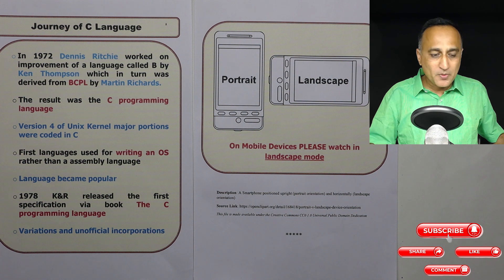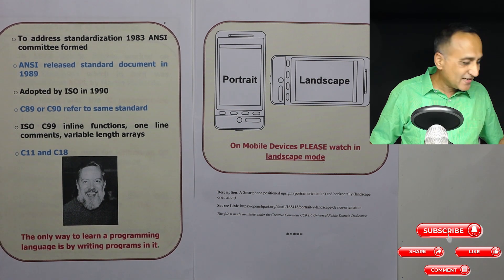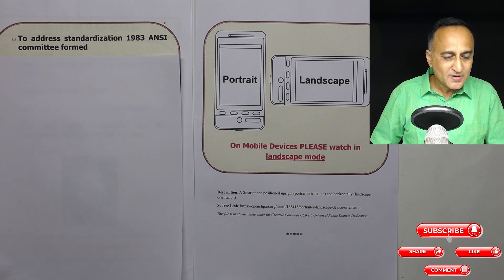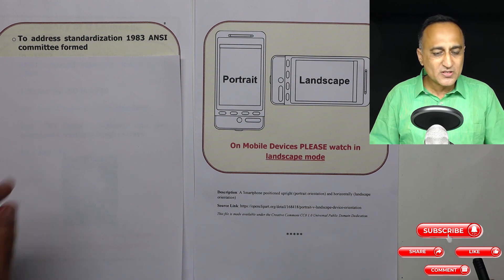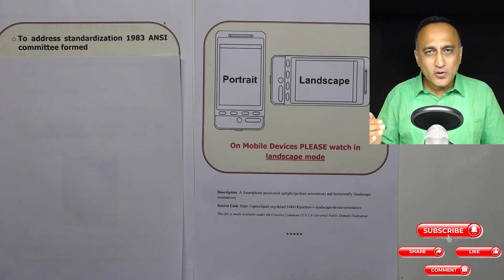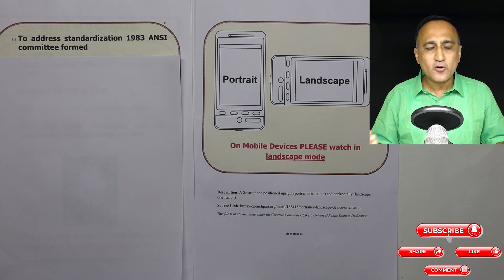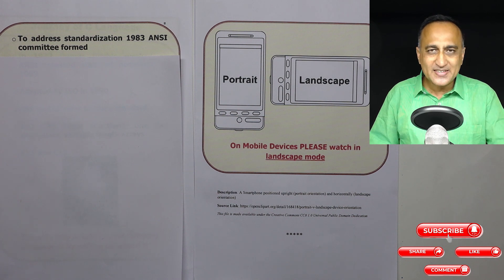Because of this reason and the popularity of the language, a proposal was made to create a standardization of the C programming language. In 1983, just as you have the Indian Standards Institute, there is something called ANSI — the American National Standards Institute. A committee was formed in 1983 to list all the standard features of C, so that code developed in one place would also work in other places across the world. If you follow the standard, your code will be able to run anywhere that follows that standard.